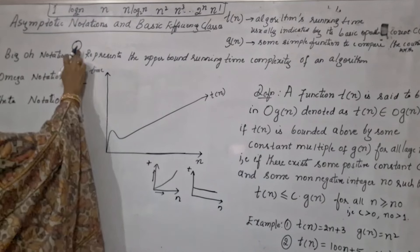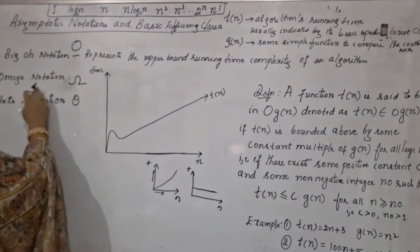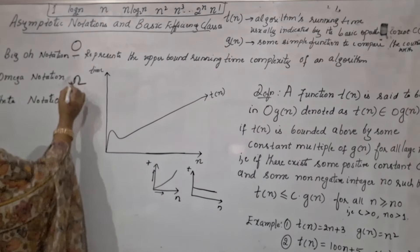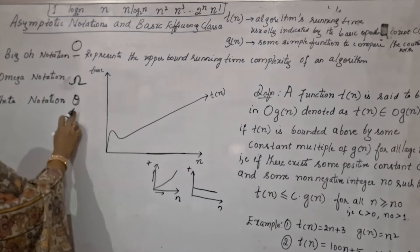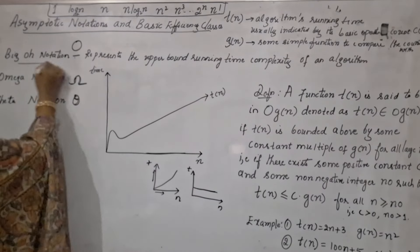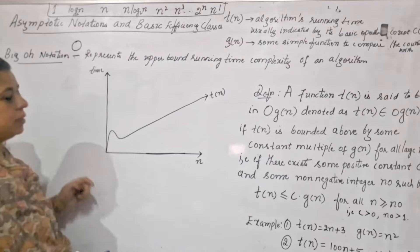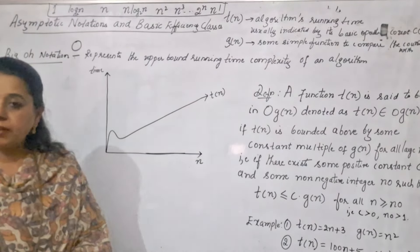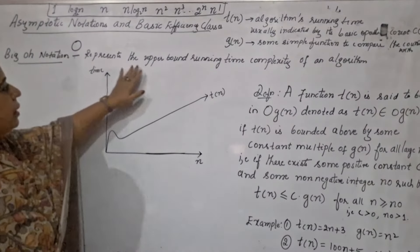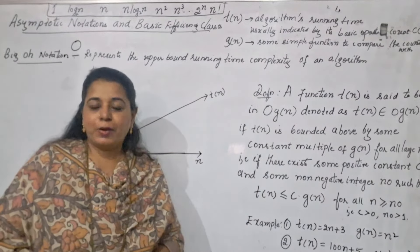Big O notation uses the uppercase O. Omega notation uses the omega symbol, and for Theta notation, this symbol. In this session I am explaining the Big O notation. To understand Big O notation, I have written here first in a very simple manner — one sentence: it represents the upper bound running time complexity of an algorithm.